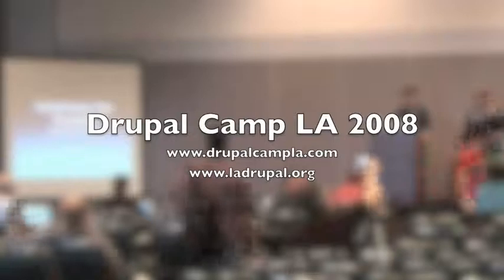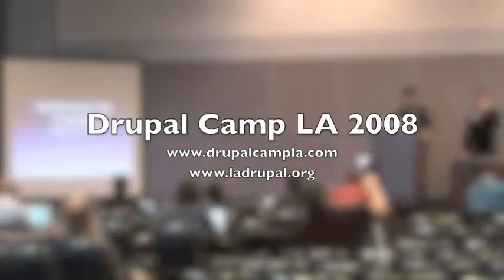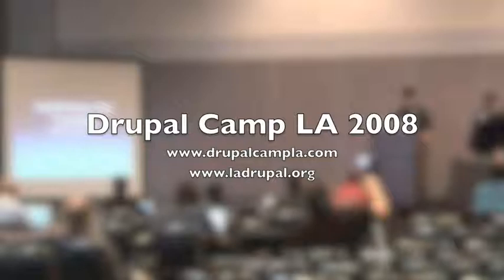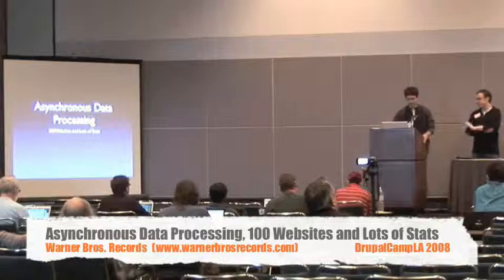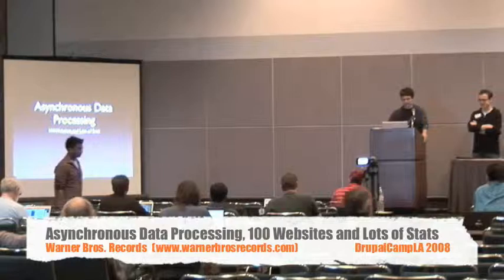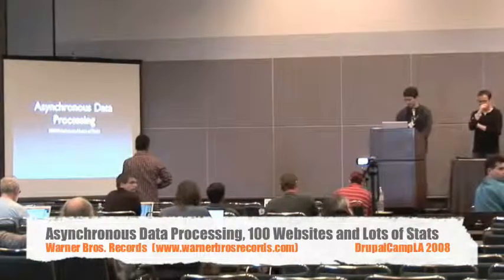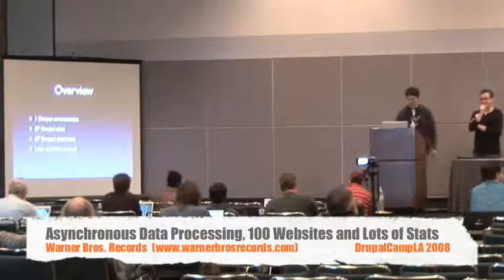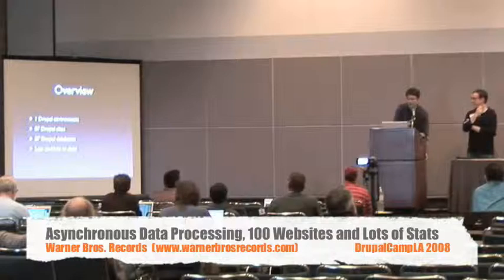Thank you for coming out here today. My name is Sean Gaber, and this is Ethan Kaplan. We both work at Warner Brothers Records. Ethan runs a tech department and I've been working there for a couple of years. Today we're going to talk about asynchronous data processing, 100 websites, and lots of steps. The 100 websites is somewhat of an exaggeration — we really only have 87 sites right now, so if we do this again in a couple months it might be 100.